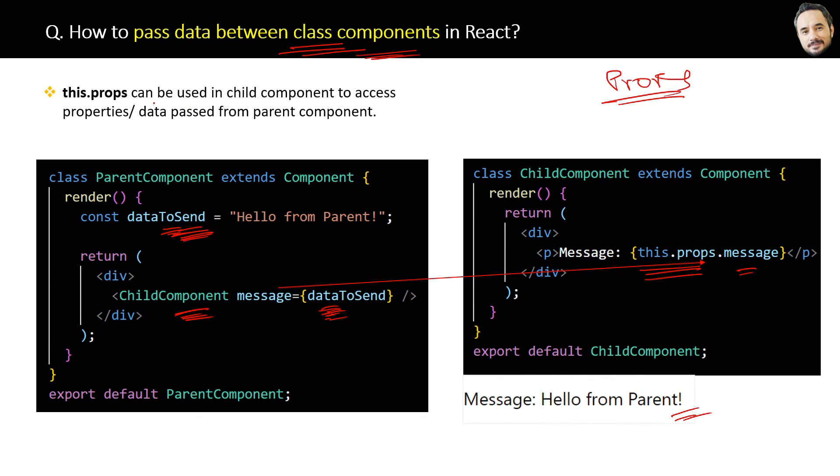The simplest answer is: this.props can be used in child component to access properties or data passed from the parent component. The same is written here for later reference.